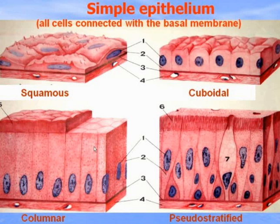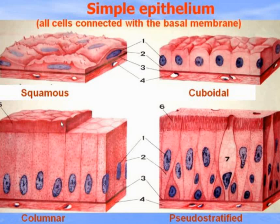There is polar differentiation of cells, meaning that the basal and apical poles of cells differ in their structure and functions. Some cells, especially columnar cells, have microvilli which combine into a brush border or absorptive border, necessary for absorption of organic substances — for example, in the small intestine and renal tubules. Cells in the apical portion may contain cilia, and this epithelium is called ciliated.